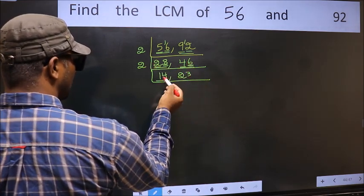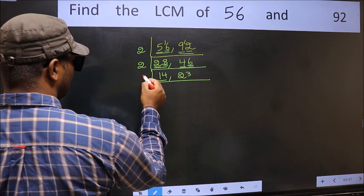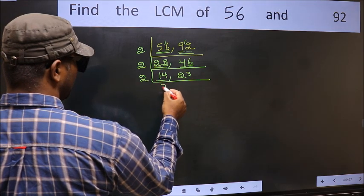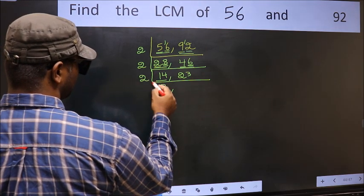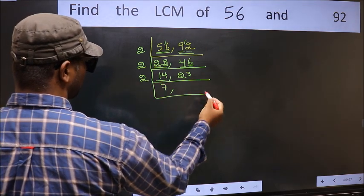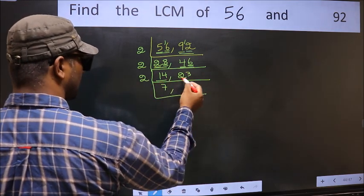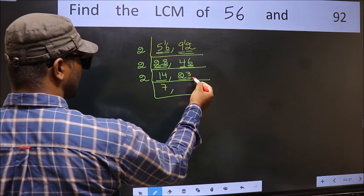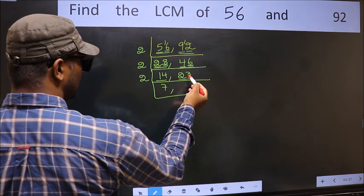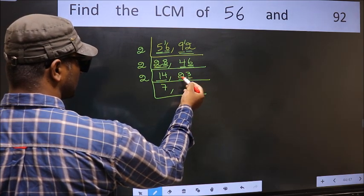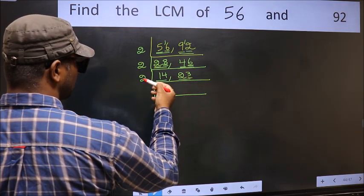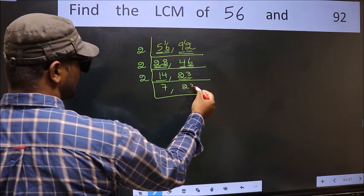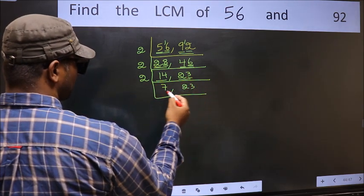Now here we have 14. 14 is 2, 7's — 14. So 14÷2=7. The other number 23: last digit 3 — it's not divisible by 2, so we write it down as it is.